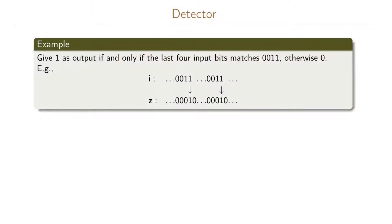Here is an example where we want to build a state machine for a detector. The detector is defined as follows: it should give a one as an output if and only if the last four input bits match zero zero one one. Otherwise it should give a zero as an output. For example, if we have an input sequence that after some time produces zero zero one one, then we should output a one. After that we output zeros until we see the sequence again.